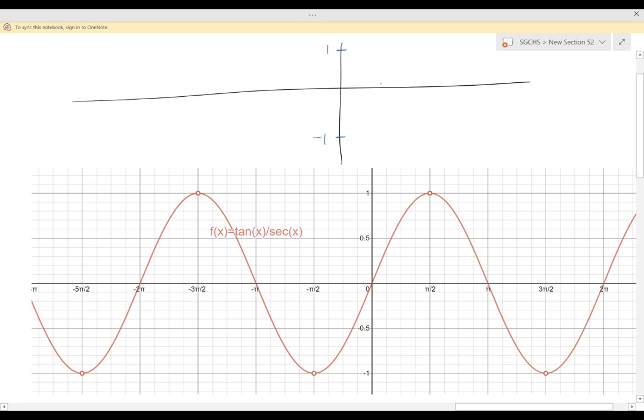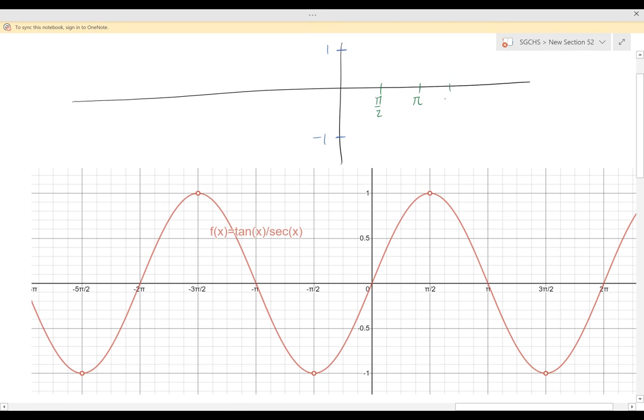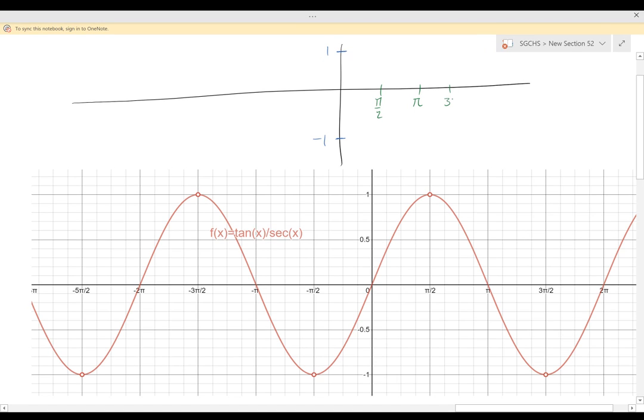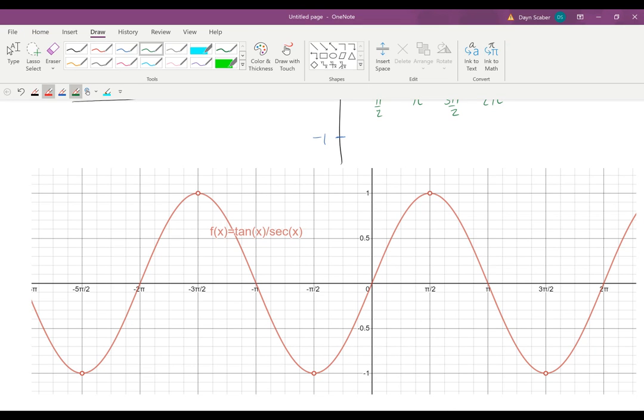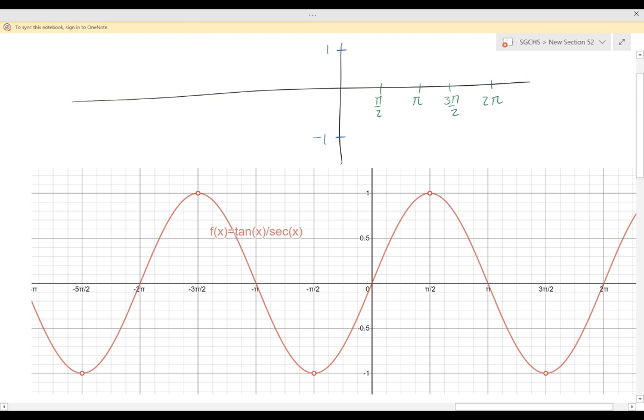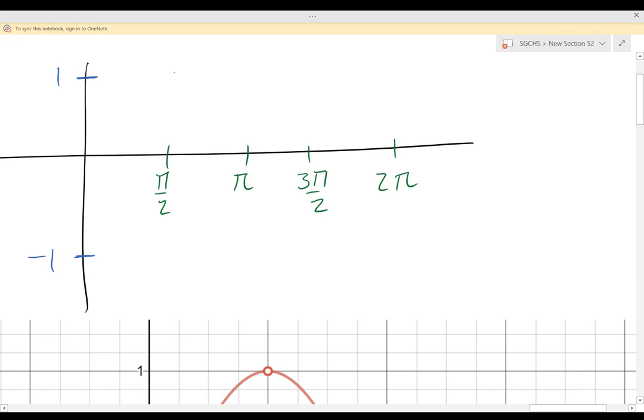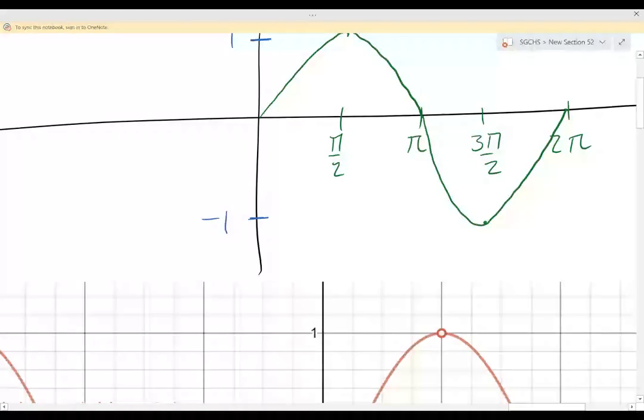And if we draw or write our quadrantal angles, this is π/2, π, 3π/2, and let's go to 2π here. If we draw that, our sine function is going to follow—let's maybe do it in a different color—this type of graph and curvature. And it would also go that other way.